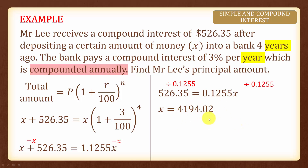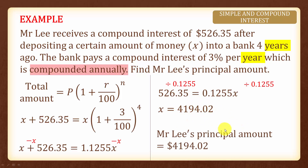This amount is Mr. Lee's principal amount. Therefore his principal amount is four thousand one hundred and ninety-four dollars and two cents.